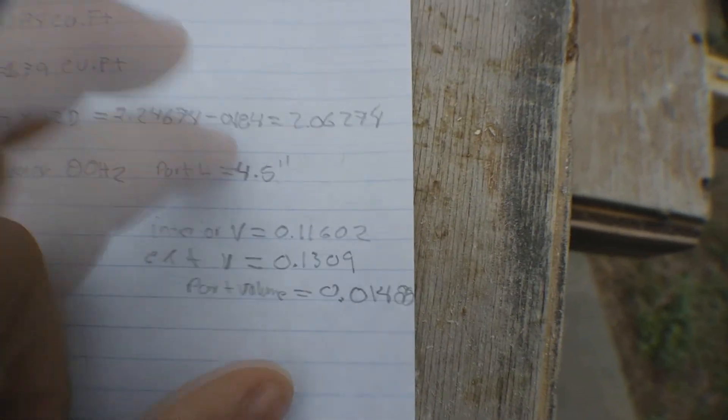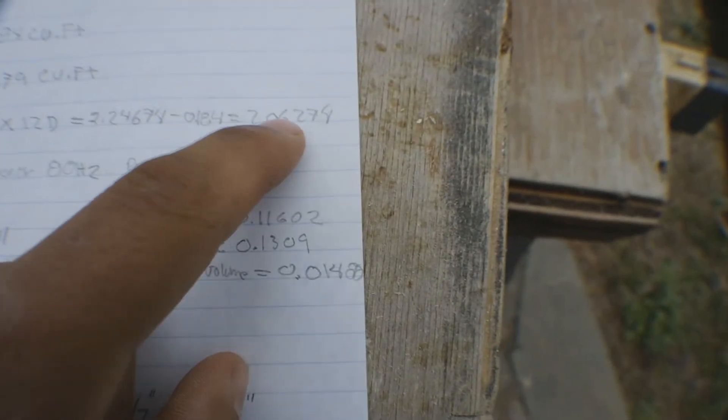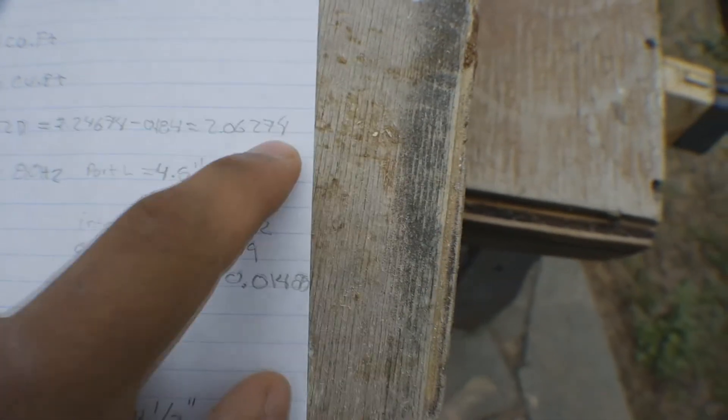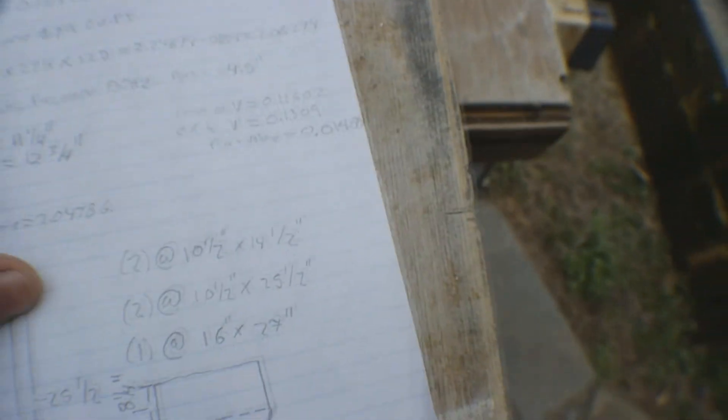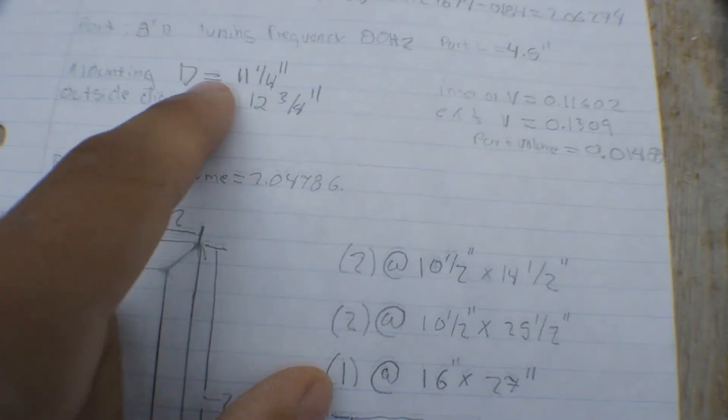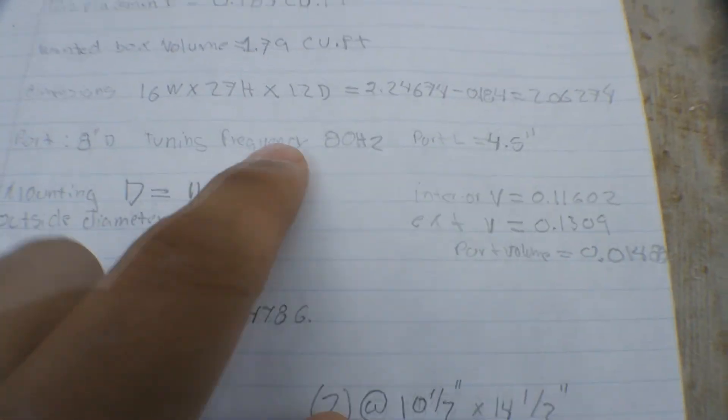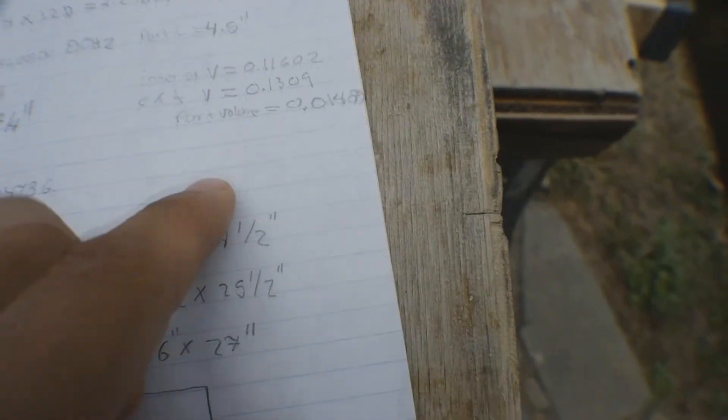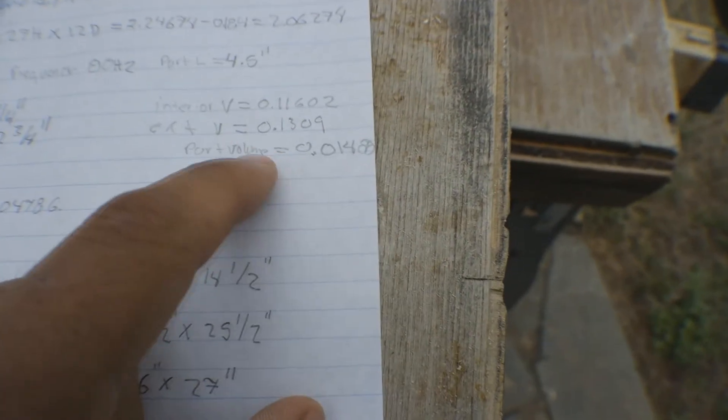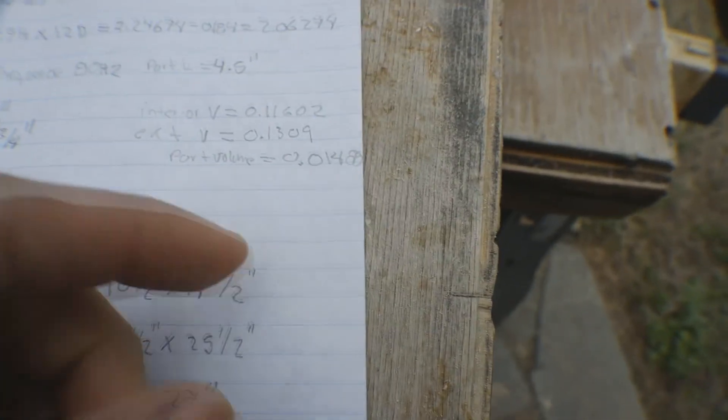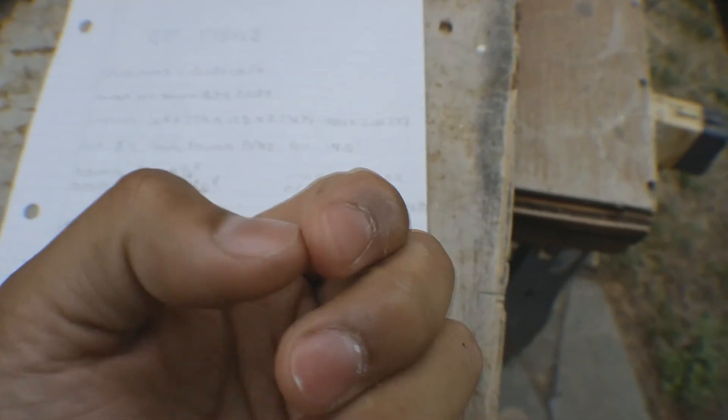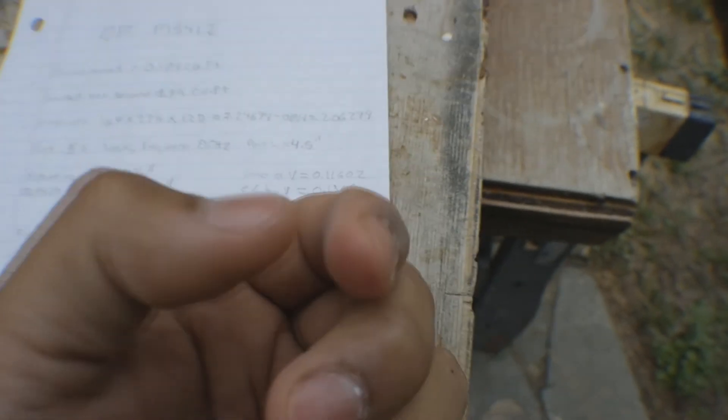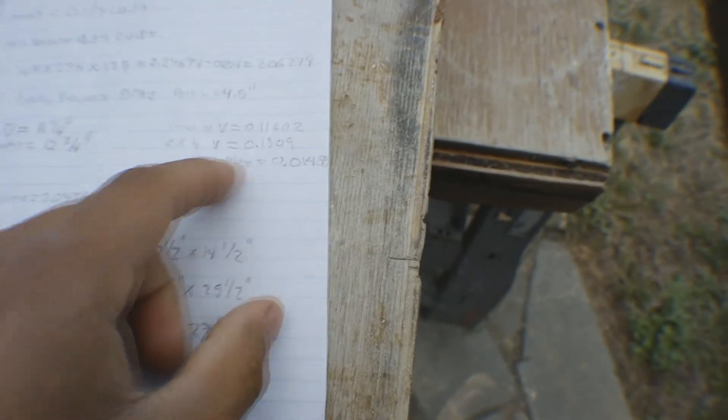Then we go to our port. We've got an 8-inch port tuned to 80 Hertz. Port length is 4.5. We calculate the port volume, the ports are about an eighth inch thick, so I came up with a 0.01488 port volume.